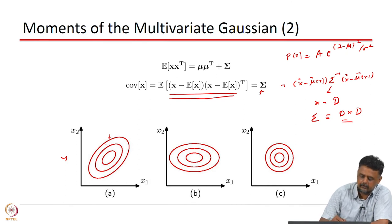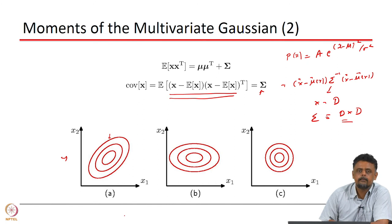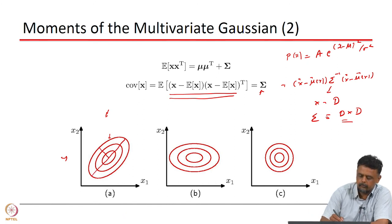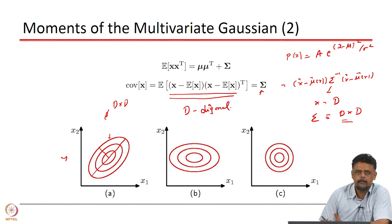These lines correspond to lines of constant PDF. You can see these are kind of tilted ellipses, corresponding to a full D cross D matrix. If D is a diagonal matrix and every diagonal element has a different value, then the lines of constant PDF correspond to ellipses like this. The major and minor axes tell you what the actual diagonal elements are—these widths correspond to the size of the diagonal elements.